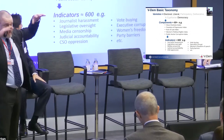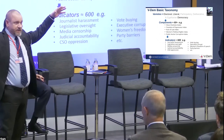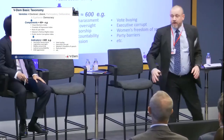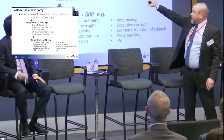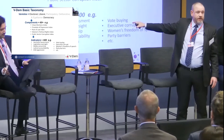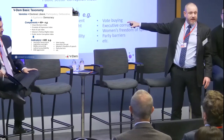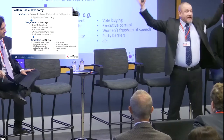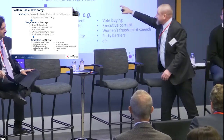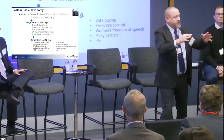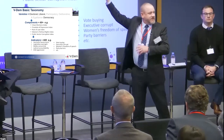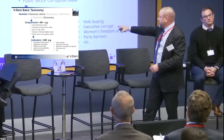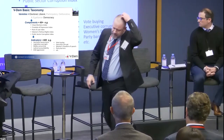We break these big ideas about democracy into components, and what we really measure are 600 specific indicators in these areas and beyond. We have indices for big ideas about democracy, but also for components — so if you're Japan and you don't want to talk about democracy but rather something like rule of law, there's an index for that too.